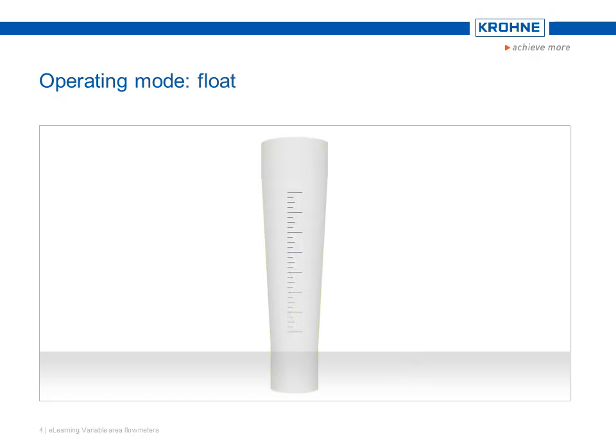The physical operating mode shows that the position of the float is a flow indicator. With glass cones, the flow rate can be read on a scale on the measuring tube itself.